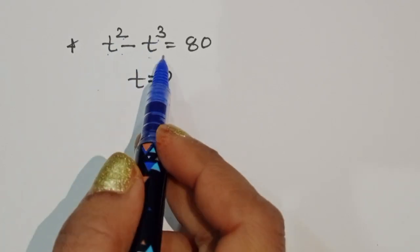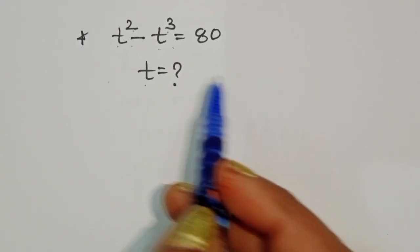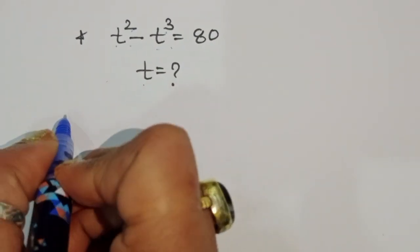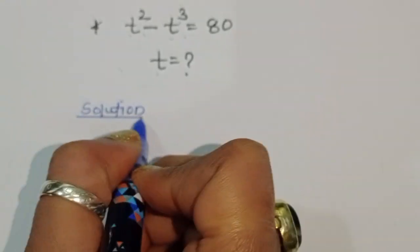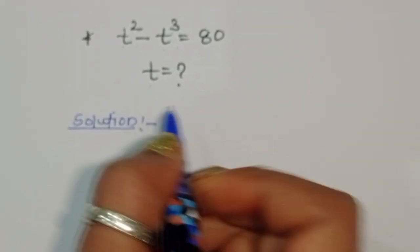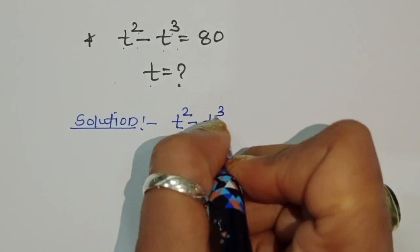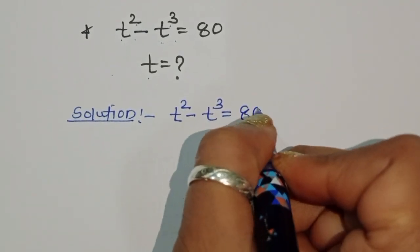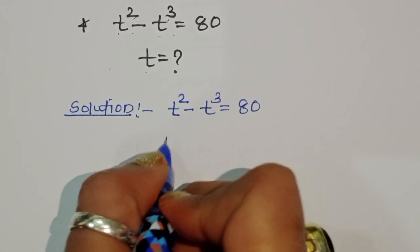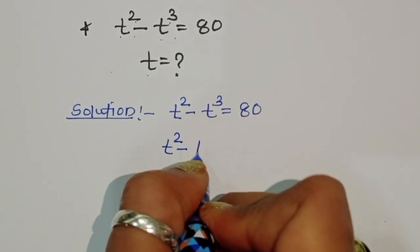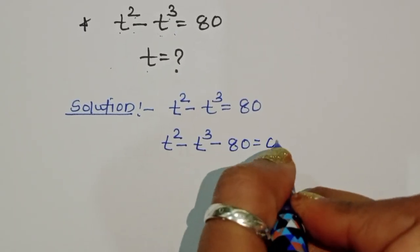We are given t squared minus t cubed is equal to 80. We have to find the value of t. So we can write this as t squared minus t cubed minus 80 is equal to 0.